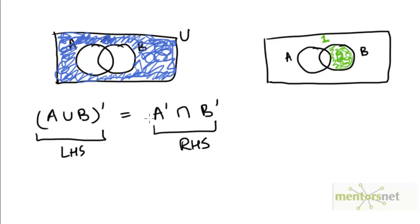We want to find out which part of the set A complement overlaps with B complement. Let's figure this out for both regions 1 and 2. Does region 1 overlap with B complement? Yes, because it's outside of the circle B, so it overlaps with B complement.